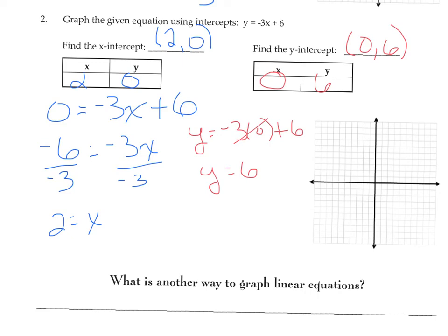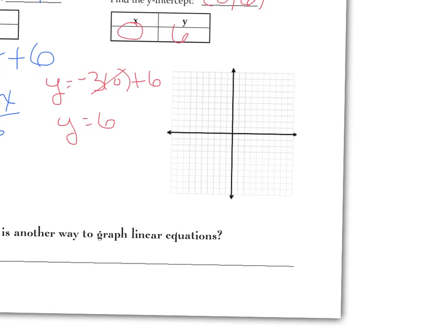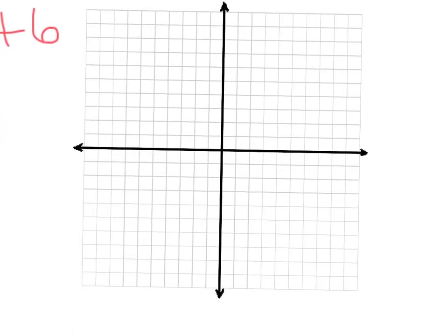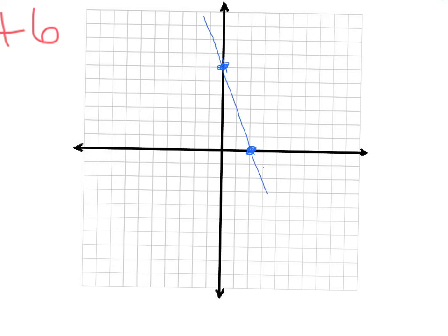Now we graph them. The x-intercept was (2, 0) — right here. The y-intercept was (0, 6) — up 6, right up here. We connect the dots. It would be best to use a straight edge to connect the dots, though it's a bit hard on this tablet. There we go — that's better.